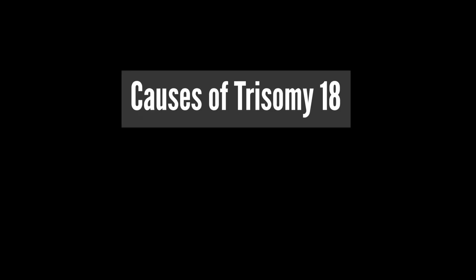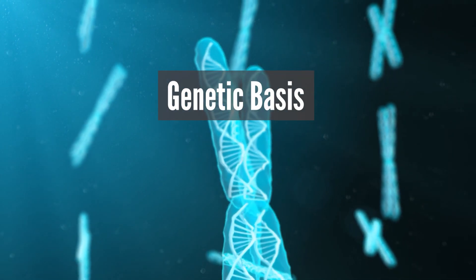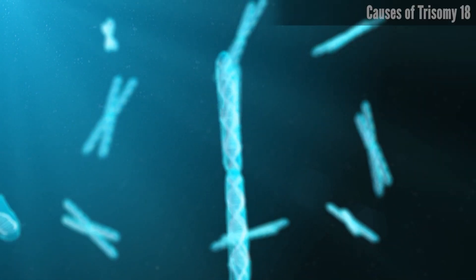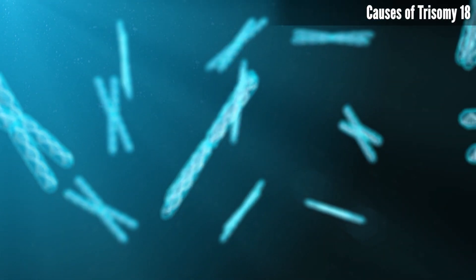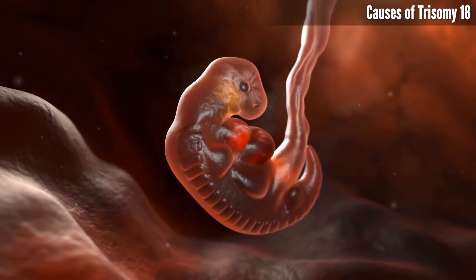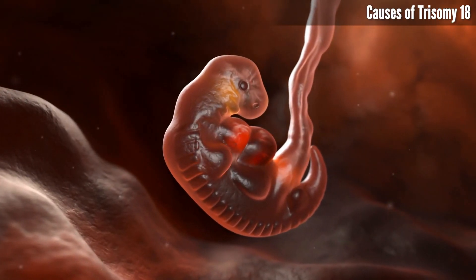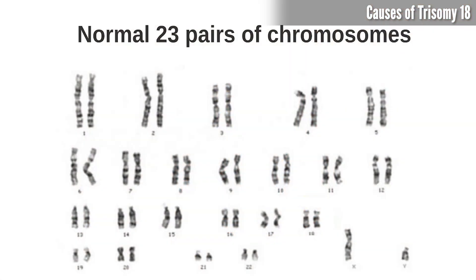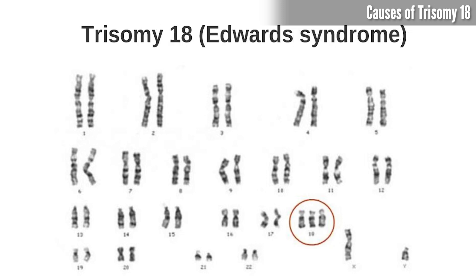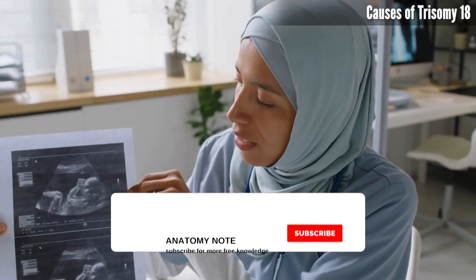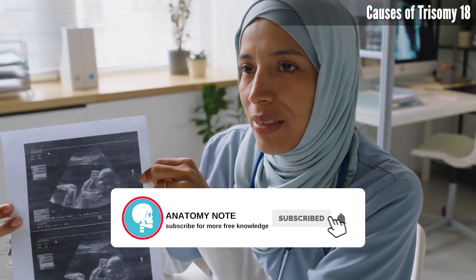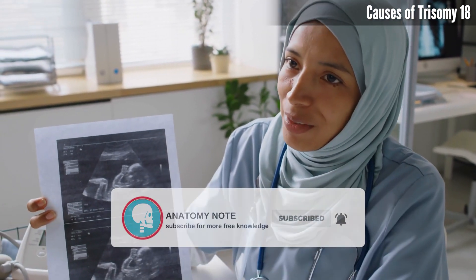Causes of Trisomy 18 — Genetic Basis. Trisomy 18 typically occurs due to an error in cell division during the early stages of fetal development. Instead of the usual pair of chromosome 18, affected individuals have three copies of this chromosome in each cell, hence the term Trisomy. The exact cause of this chromosomal abnormality remains unclear, but it is believed to arise sporadically rather than being inherited from parents.